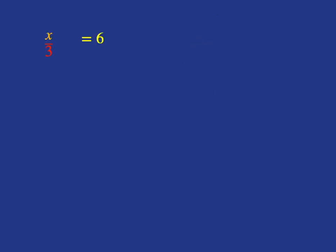A final example. Here we've got x over 3 is equal to 6. Now remember, if we write x over 3, that just means x divided by 3 is equal to 6.